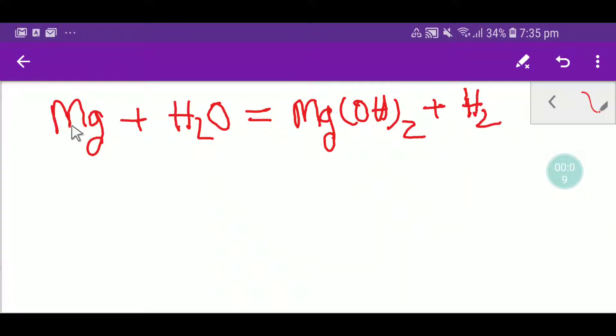This is magnesium, this is water, and this is magnesium hydroxide and this is hydrogen. To balance this equation I can draw a table like this.